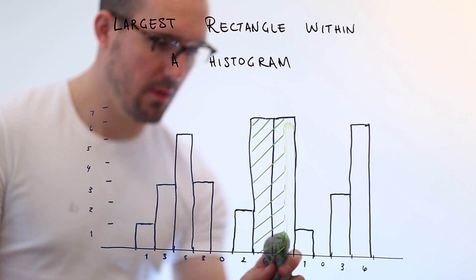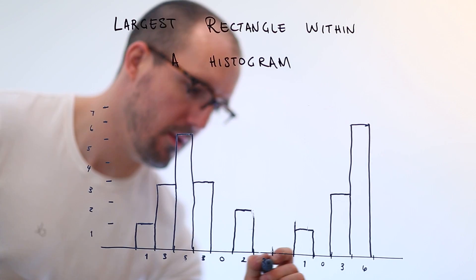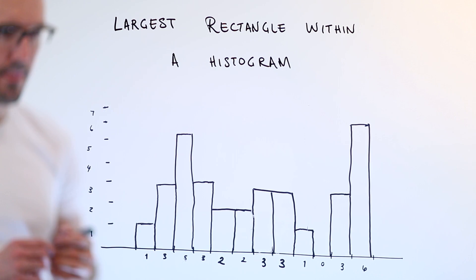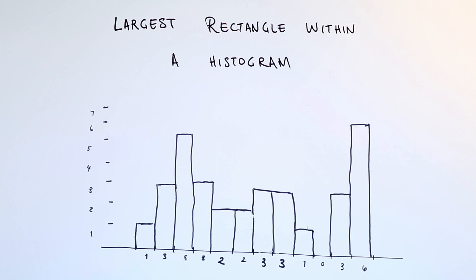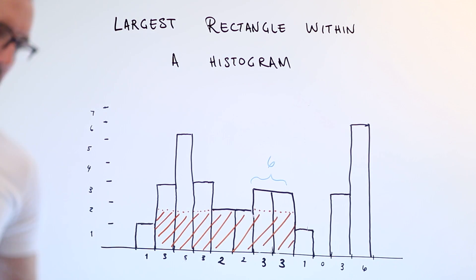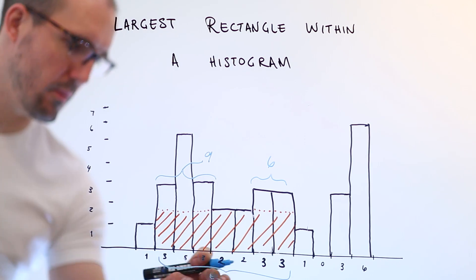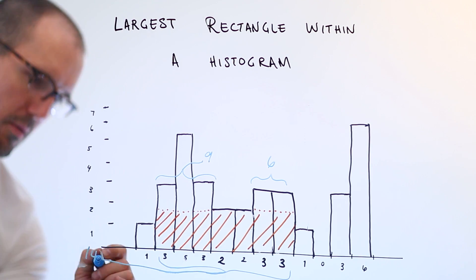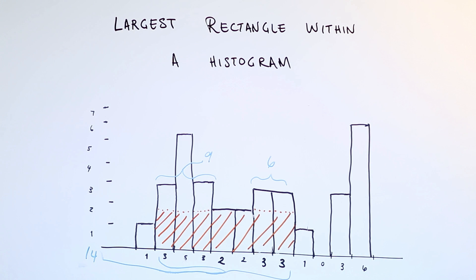For instance, what if we modified the histogram to look like this? You can see now we've got some real contenders for the largest rectangle. We've got a three-by-two, we've got a three-by-three, but then way down at the bottom we actually have a two-by-seven, which is in fact the largest rectangle in this histogram. Let's get to the exciting part — let's talk about the algorithm.